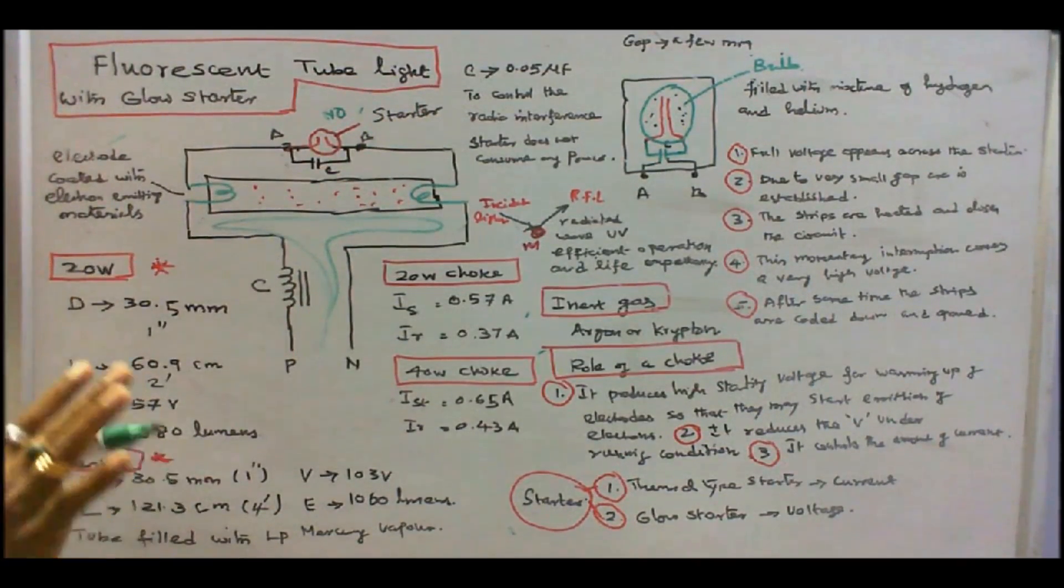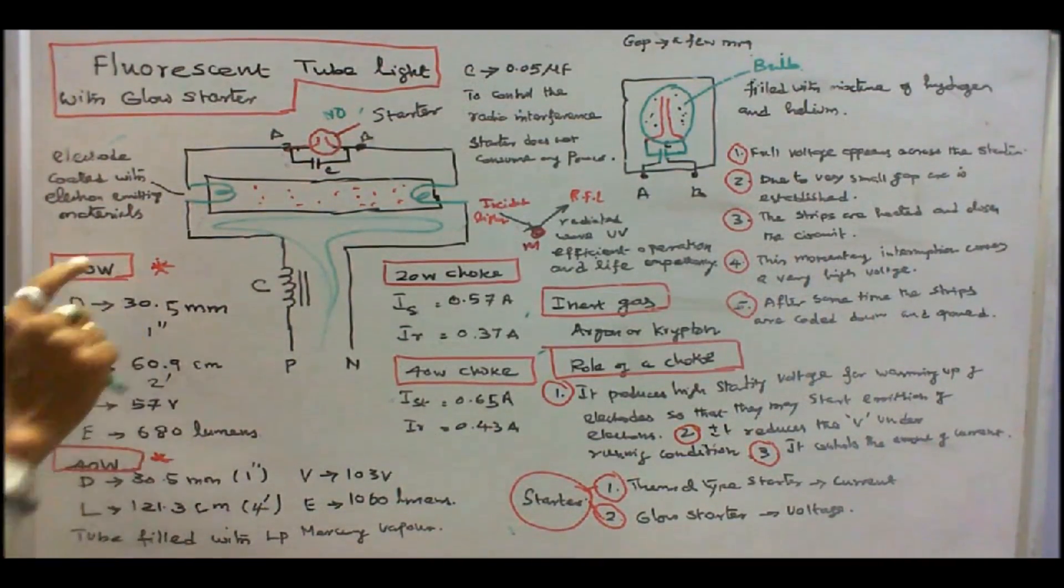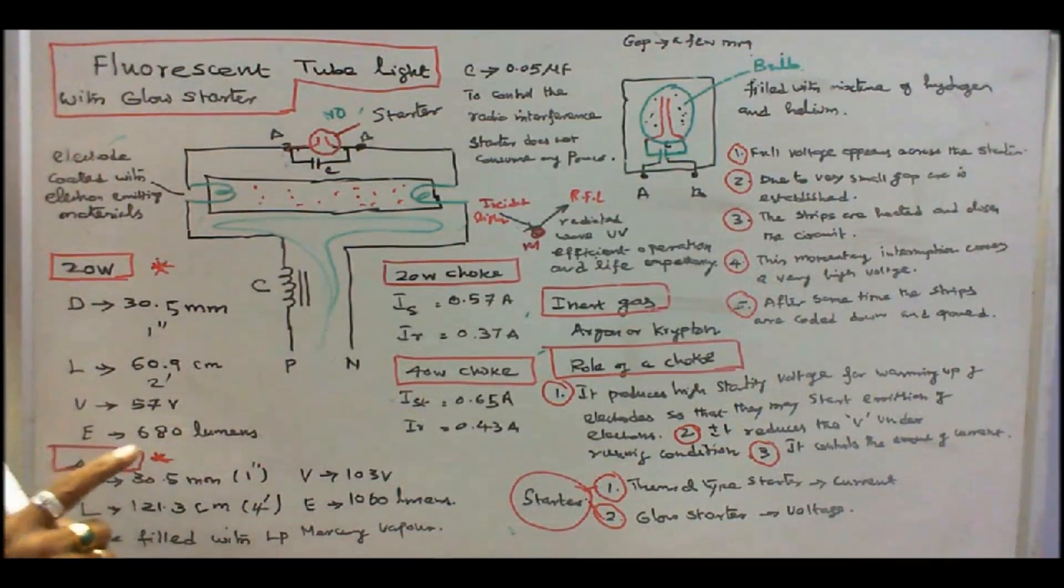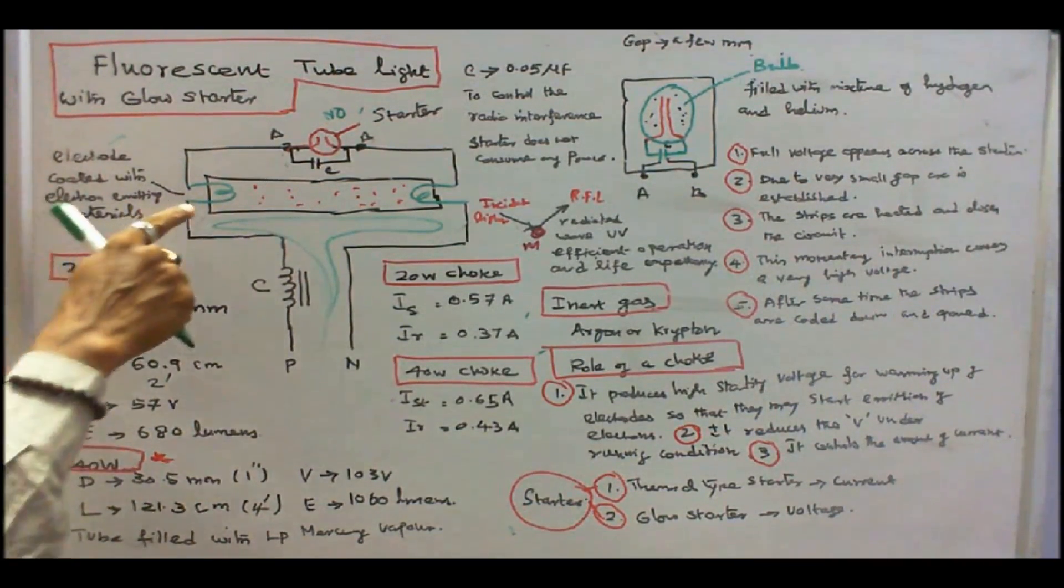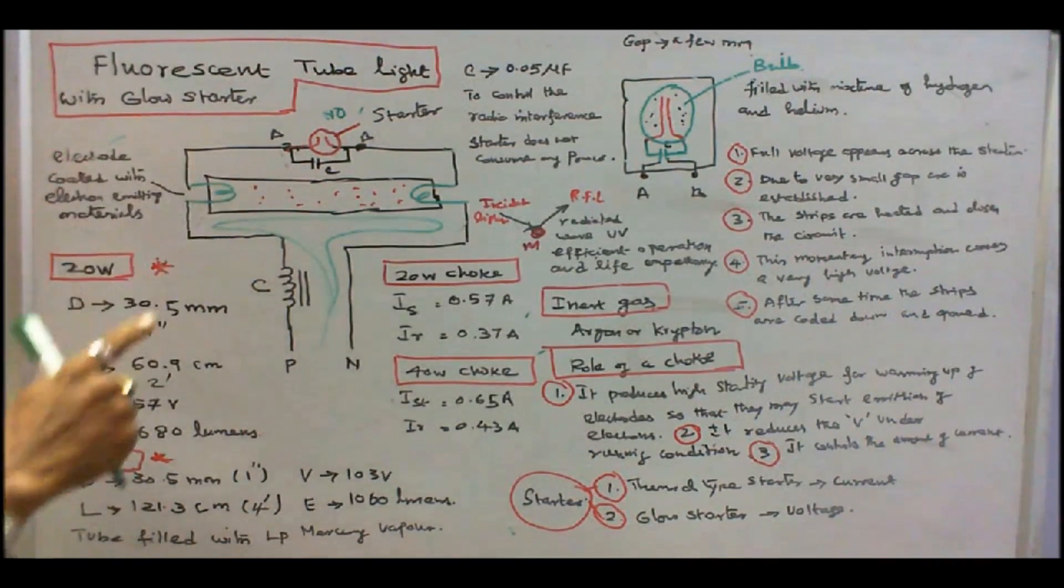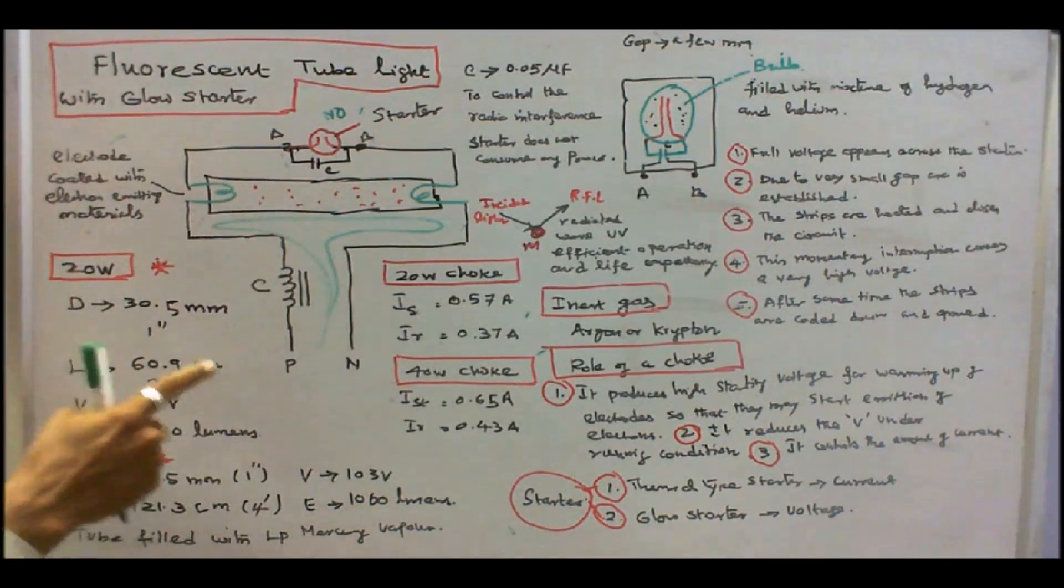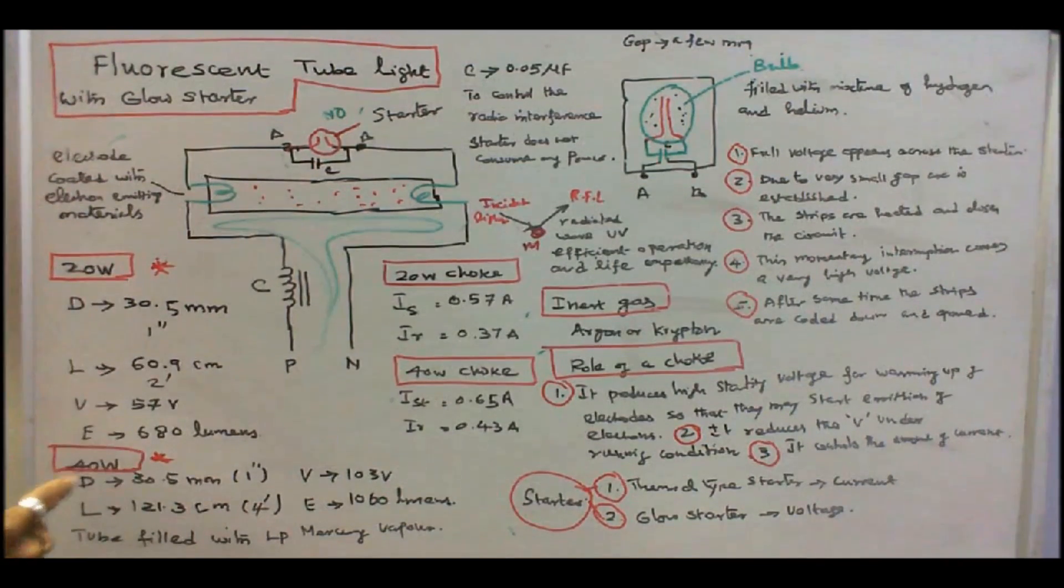Commercially, there are four rating tubelites are available. One is 20 watts, 40 watts, 65 watts, and 80 watts. I choose only 20 and 40. These two are frequently used. The diameter of the tube is, that is tubelite, diameter is 30.5 mm. The length of the tubelite is 2 feet. Its operating voltage is 57 volts. Lumen output is 680 lumens.